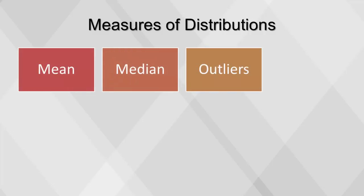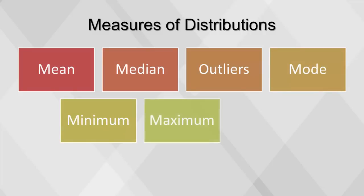We'll begin by defining and calculating the salary variable's measures of distribution: mean, median, outliers, mode, minimum and maximum values, and quantiles.